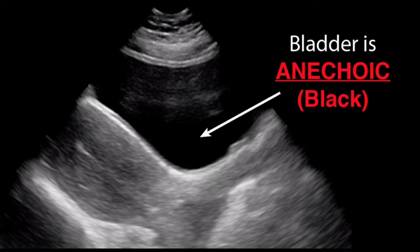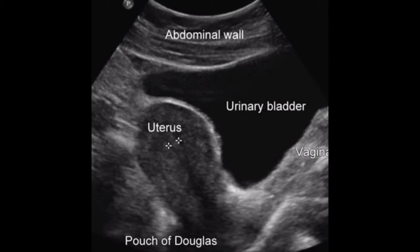For transabdominal evaluation, the bladder should be adequately distended to displace bowels superiorly out of the true pelvis and provide an acoustic window to visualize the uterus and adnexa.